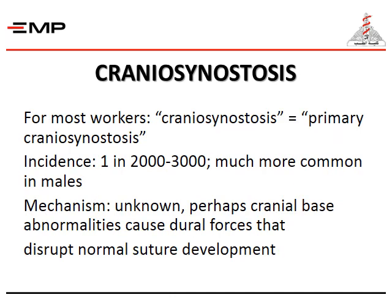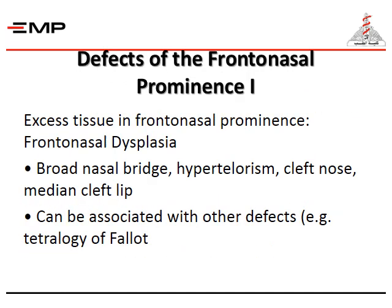For most workers, craniosynostosis refers to primary craniosynostosis. Its incidence is one in every 2,000 to 3,000, much more common in males. The mechanism is unknown, but cranial base abnormalities may cause dural forces that disrupt normal suture development. Defects of the frontonasal prominence include excessive tissue causing frontonasal dysplasia, broad nasal bridge, hypertelorism, cleft nose, and median cleft lip — which can be associated with other defects such as tetralogy of Fallot.